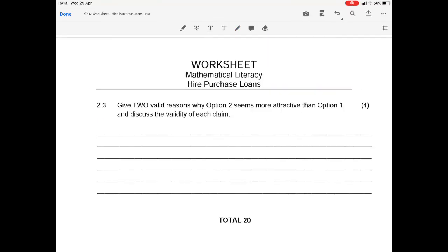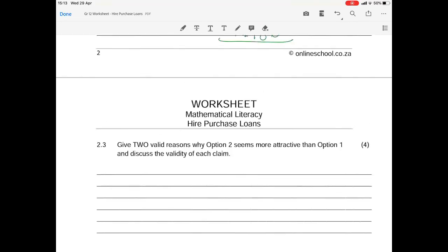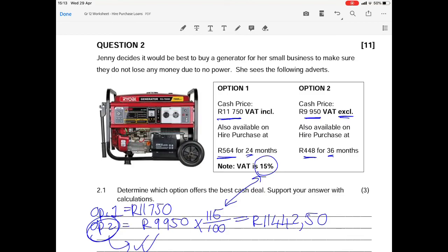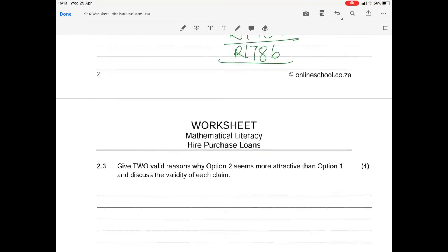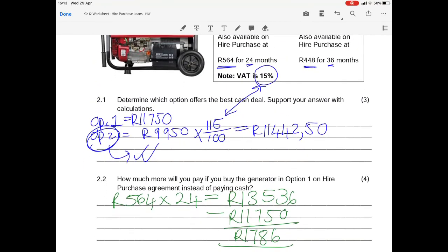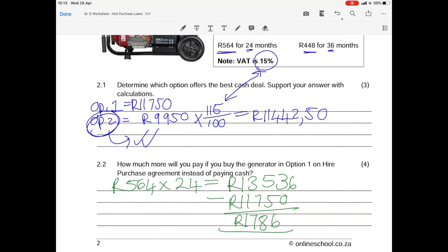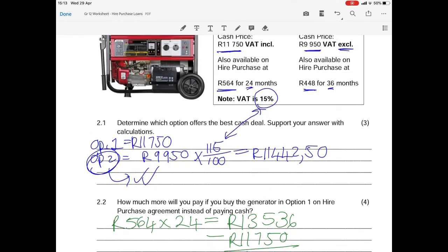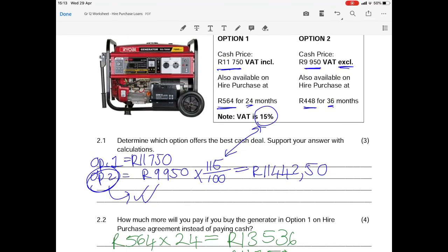Your last question: Give two reasons why option 2 seems more attractive than option 1 and discuss the validity. Firstly, your cash price of option 2 looks much less. It is R9,950 but the important thing is that that is VAT excluded. However we did work out in question 2.1 that even with VAT included option 2 is still marginally cheaper than option 1.